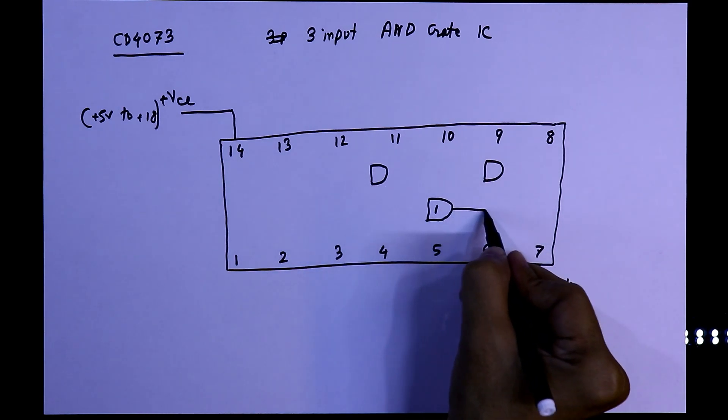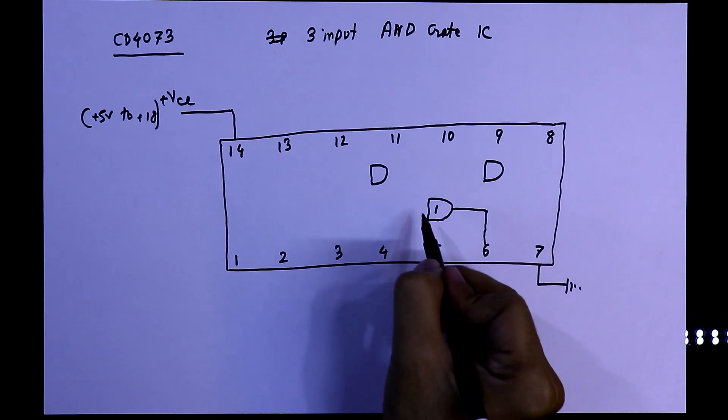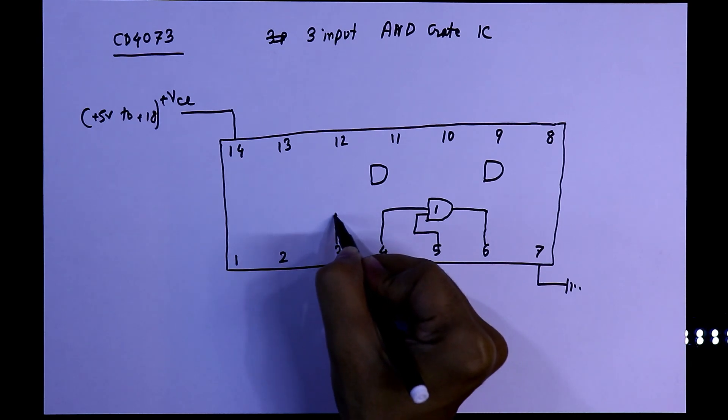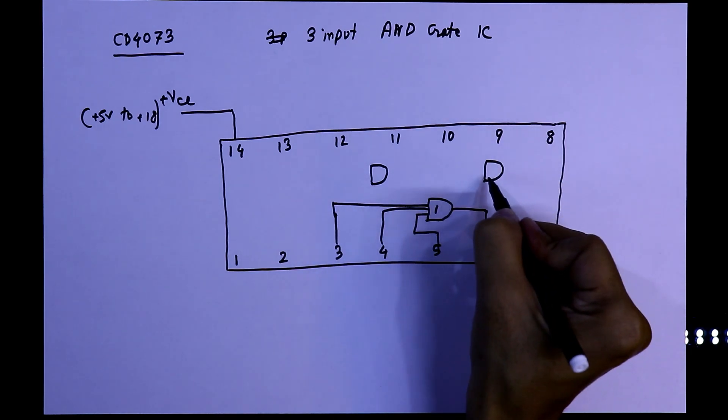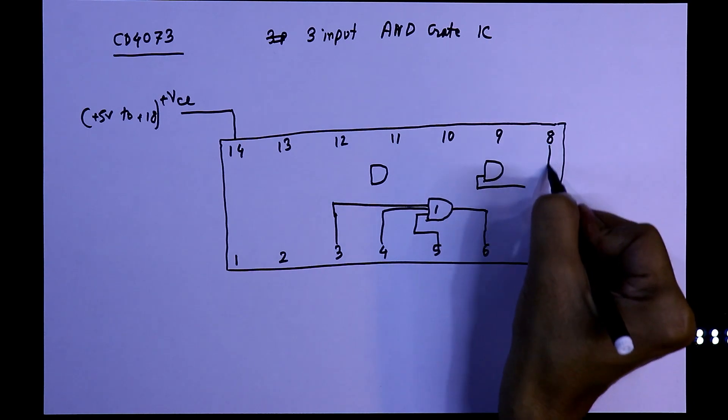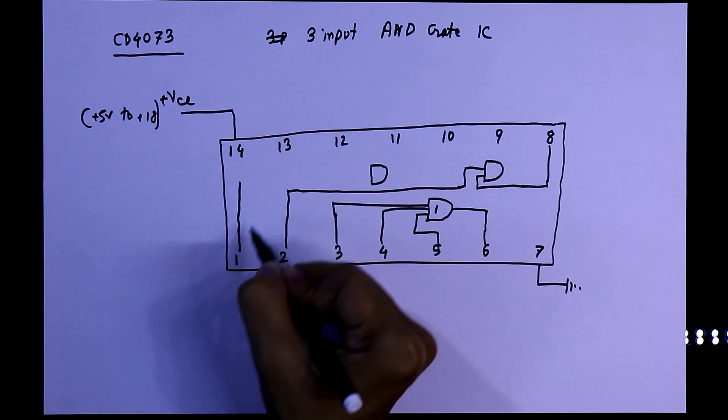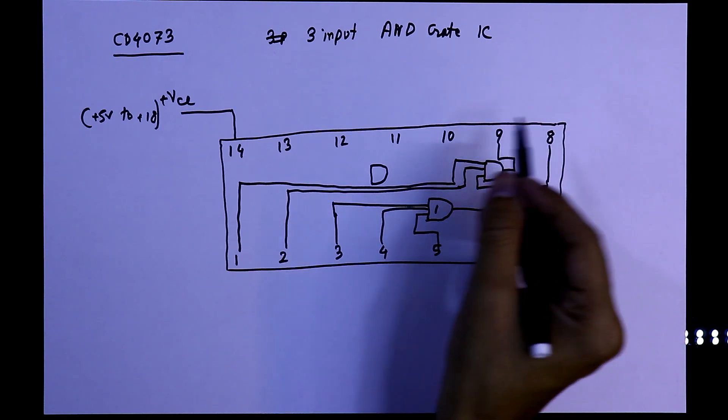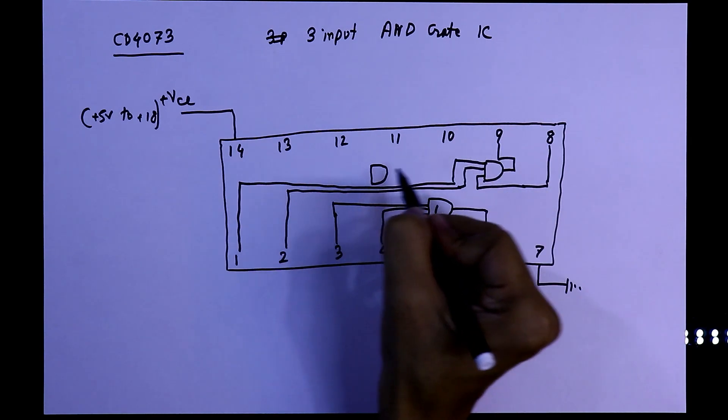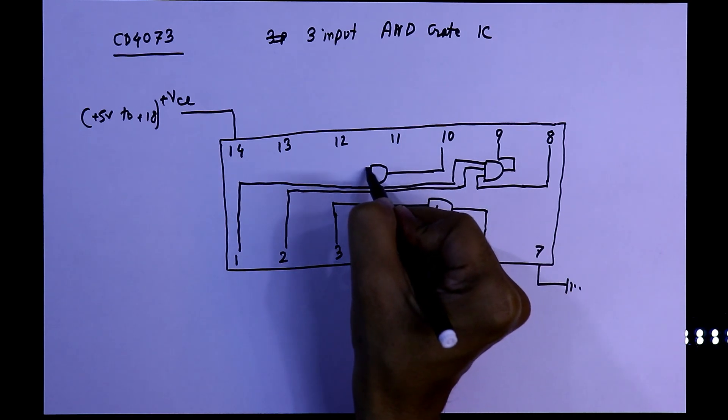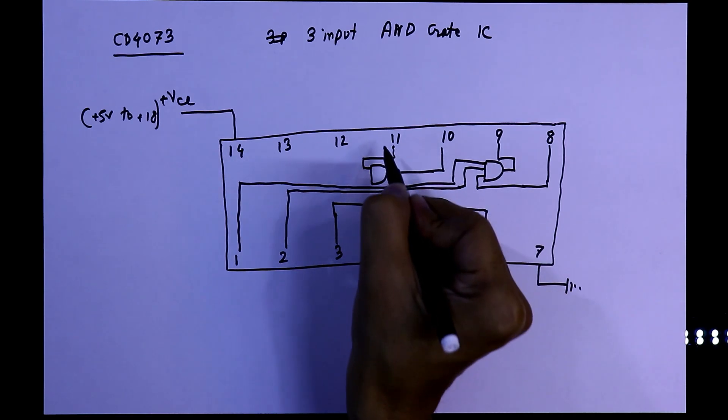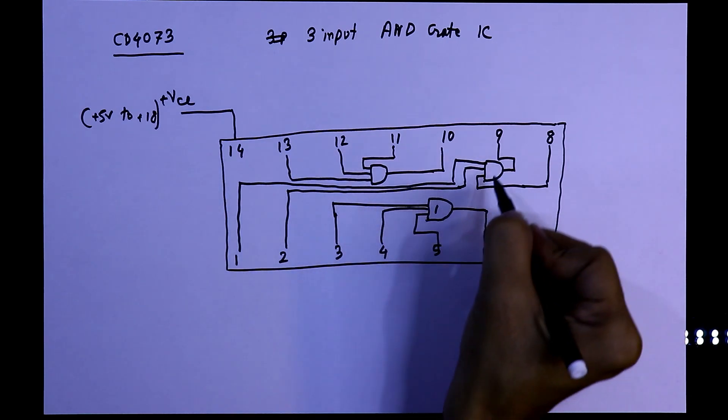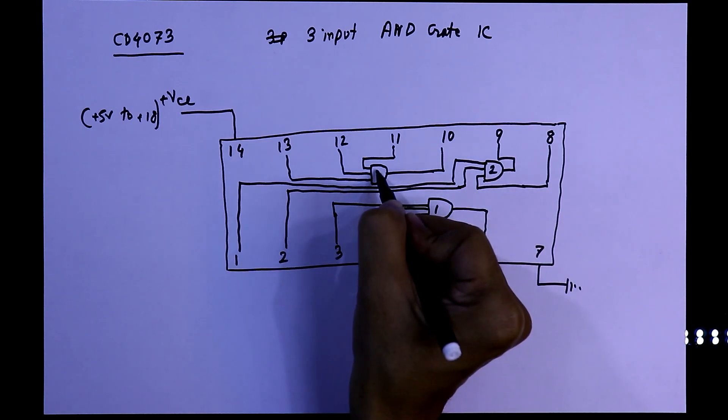Gate 1's output is pin number 6, and the inputs are pins 5, 4, and 3. Gate 2's input pins are pins 8, 2, and 1, and its output is pin 9. Gate 3's output is pin 10, and the inputs are pins 11, 12, and 13.